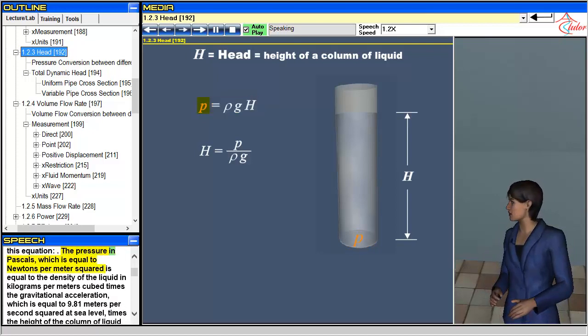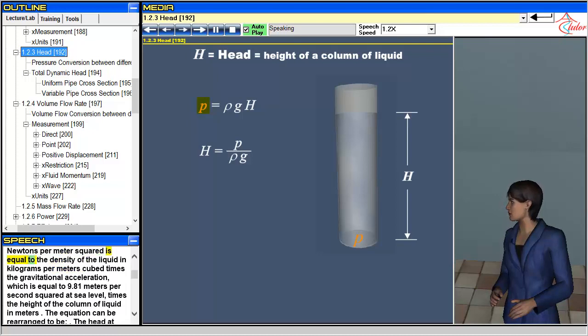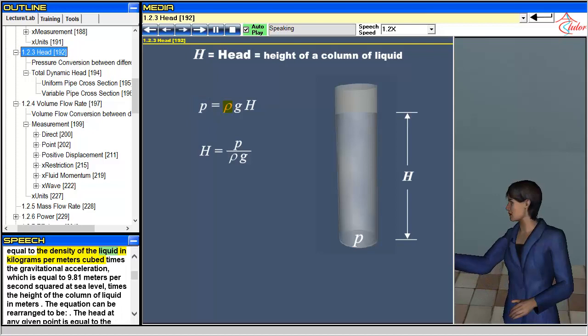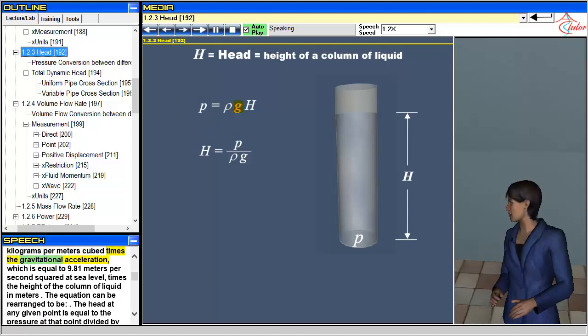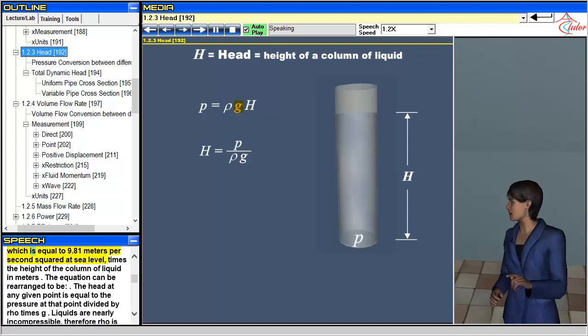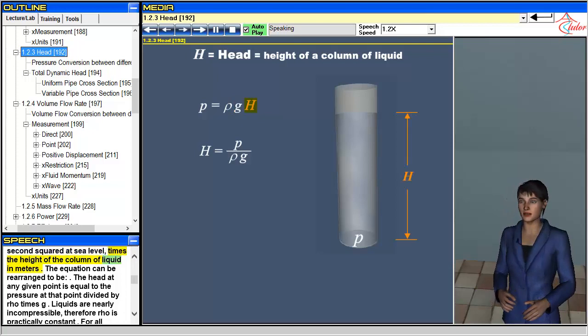The pressure in pascals, which is equal to newtons per meter squared, is equal to the density of the liquid in kilograms per meters cubed, times the gravitational acceleration, which is equal to 9.81 meters per second squared at sea level, times the height of the column of liquid in meters.